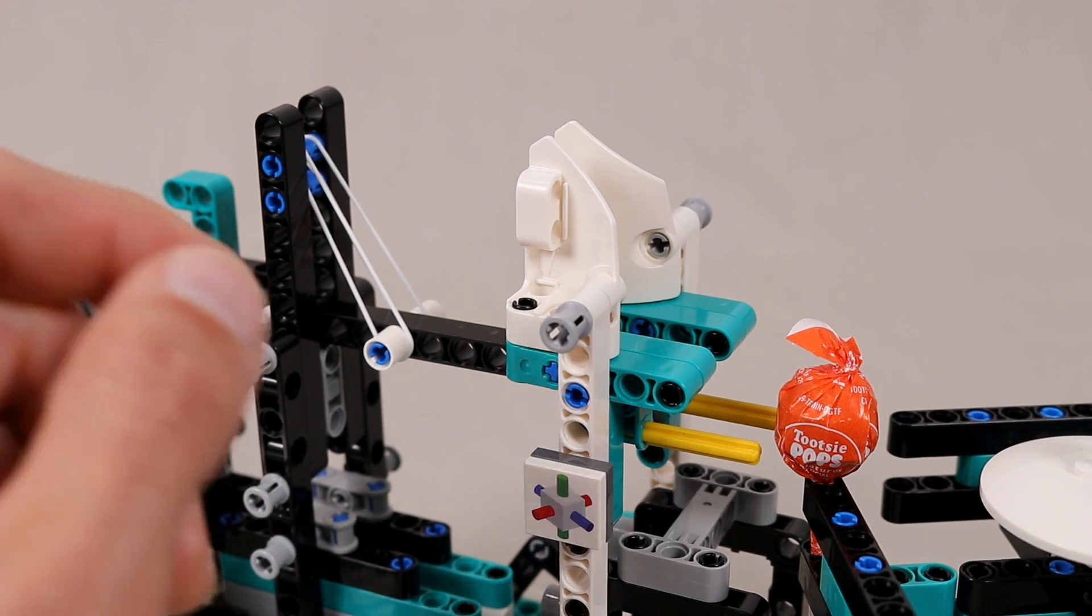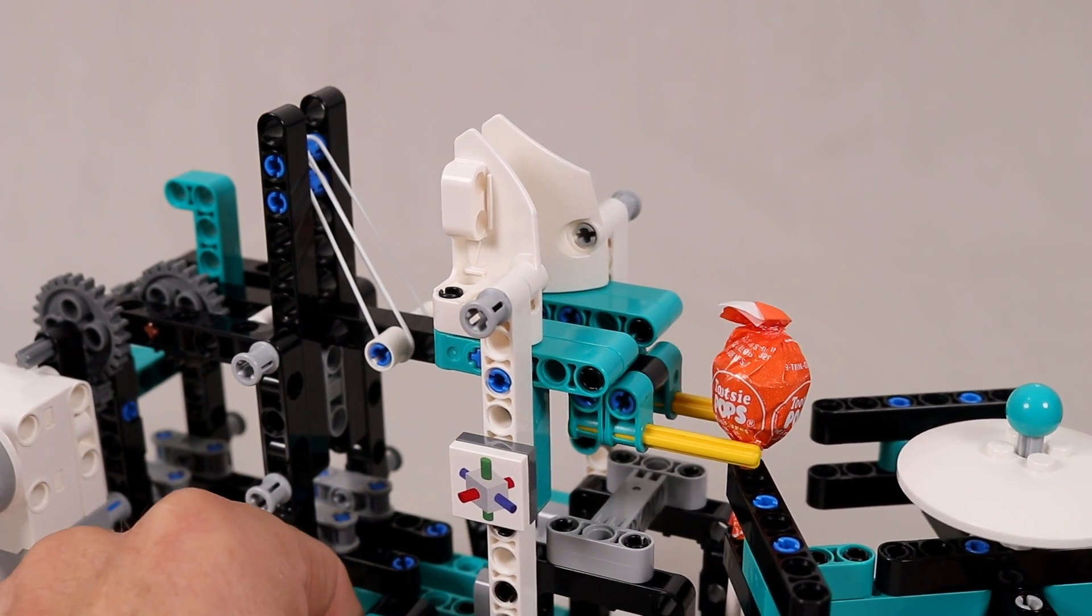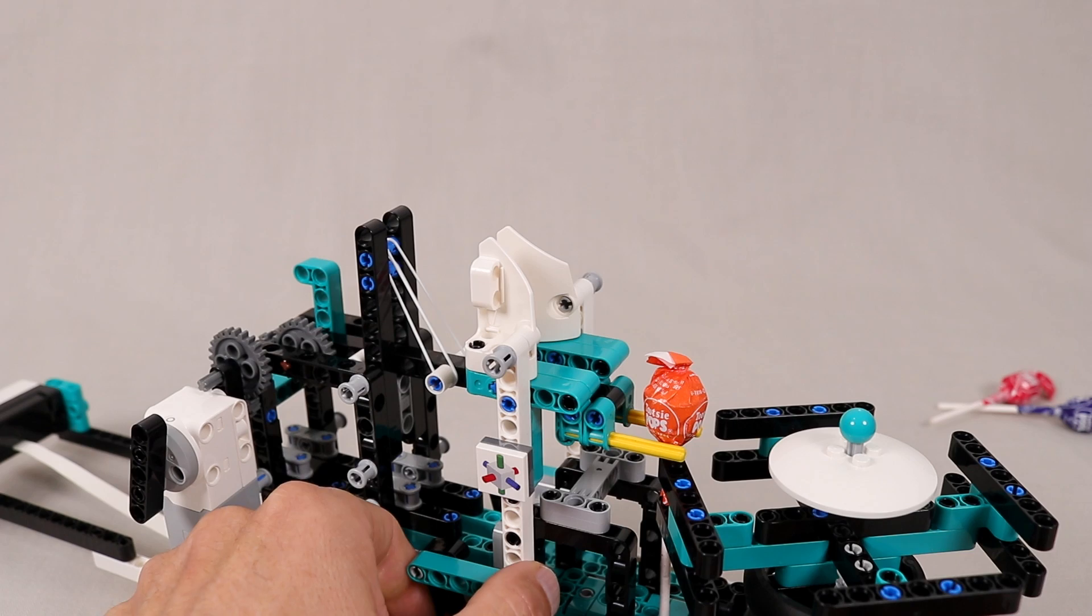So as the supply is pulled in, two things happen. First, a lollipop is pulled onto the end of the catapult arm, and second, the arm clears the constraints so the lollipop is launched.